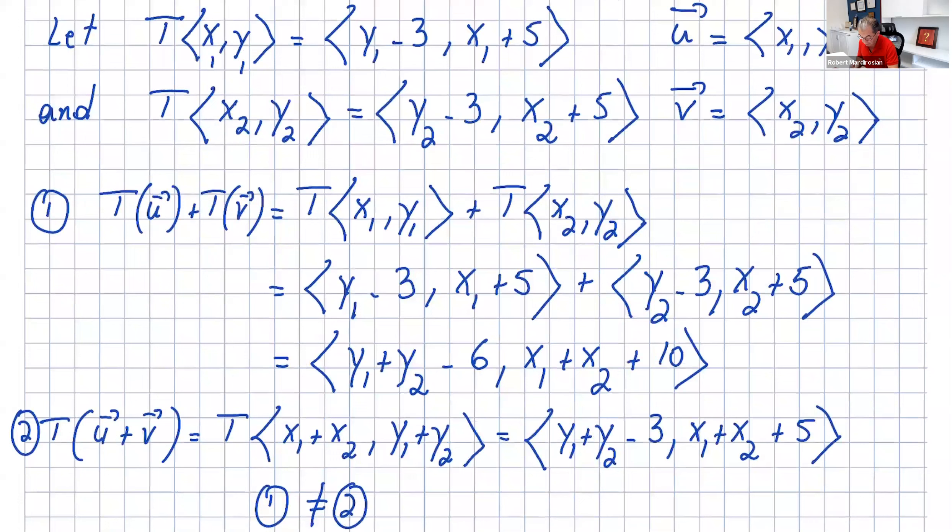Now these are the components of two vectors. You can just write this as ⟨y₁ + y₂ - 6, x₁ + x₂ + 10⟩ by combining these.